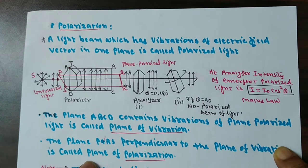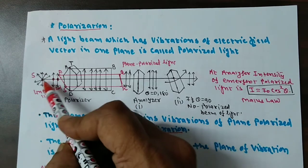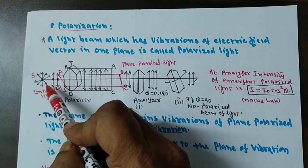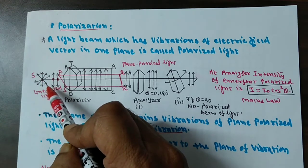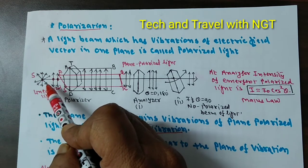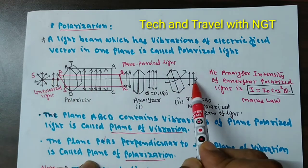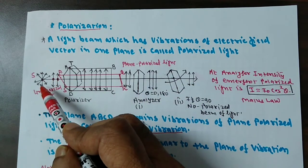First of all, let us see what we mean by unpolarized light. This one is the source. If the electric field vectors are vibrating in all directions, remaining perpendicular to the direction of wave propagation, it is called unpolarized light.